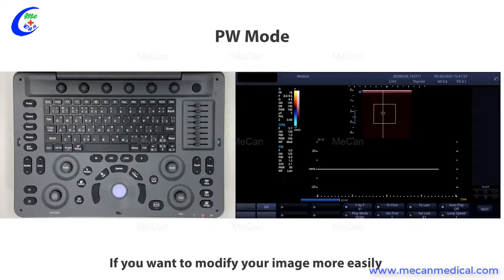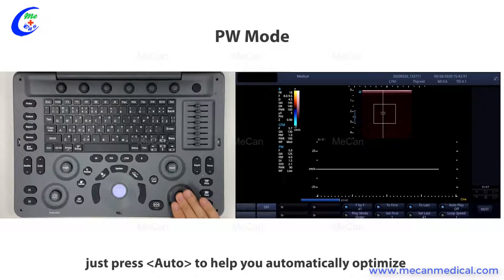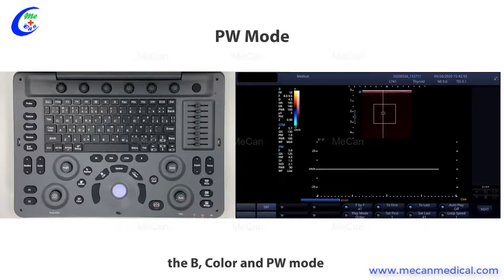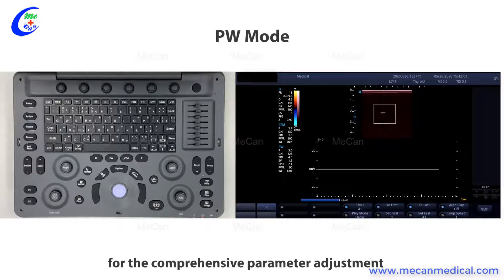If you want to optimize your image more easily, just press AUTO to automatically optimize B-mode, color, and PW mode. It saves your time for comprehensive parameter adjustment.